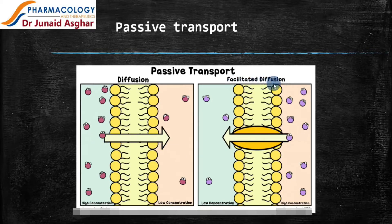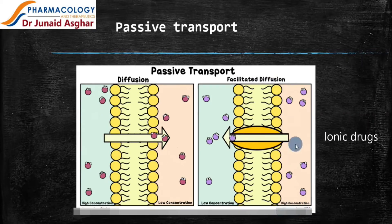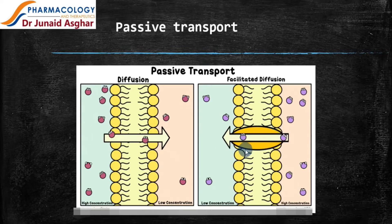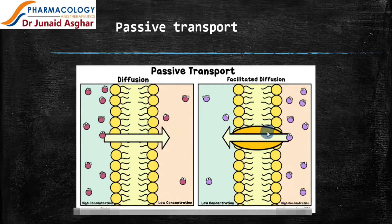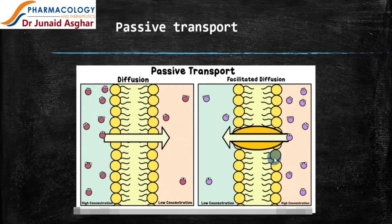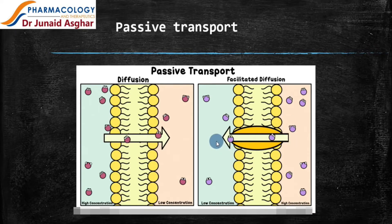Let's have a look at facilitated diffusion, where the drug molecules are transported from a higher concentration to a lower concentration. This is the higher concentration and this is the lower concentration of the drug. But here, there is a specialized carrier protein in the cell membrane doing all this job. So facilitated diffusion is exactly like diffusion, but the only additional thing is the presence of a carrier protein, which delivers the drug across the membrane from higher to lower concentration.